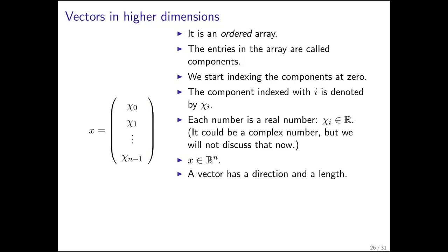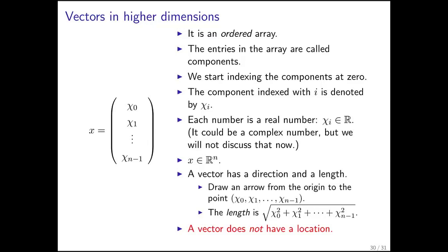Remember that a vector has a direction and a length. You can envision it by drawing the arrow from the origin to the point with coordinates chi 0, chi 1 through chi n minus 1, and then its length is the Euclidean length, which means the square root of the sum of the squares of the components. Very important to realize is that a vector does not have a location. In other words, you can choose to place it at the origin, but you can also choose to place it wherever it happens to be convenient.